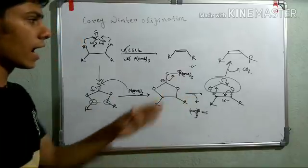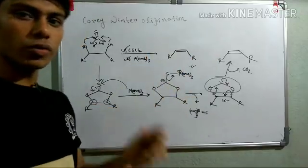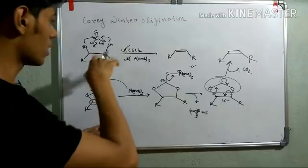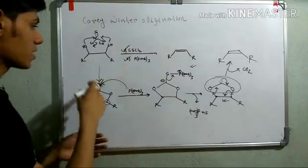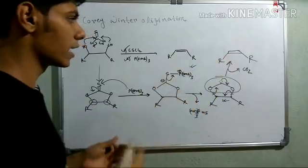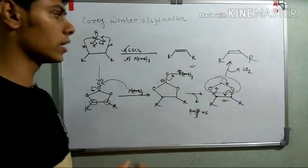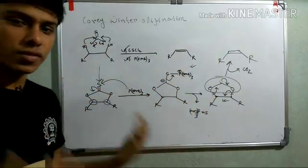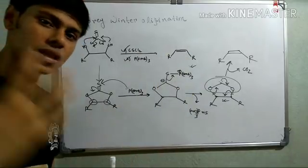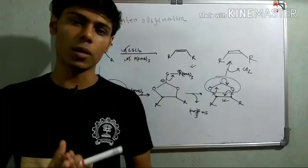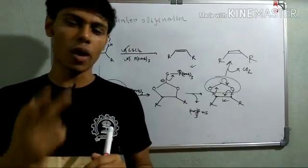So, due to this concerted bond breaking step, this reaction is stereospecific and the stereochemistry of the product will be dependent on whether you are starting with your cis-diol or trans-diol. For example, in this case, I have started with the cis-diol. So, that's why I get cis-alkene. If I would start with the trans-diol, I would get the trans-alkene. So, this is the stereoselectivity or stereospecificity outcome of the Corey-Winter olefination reaction.